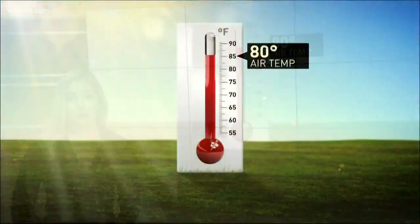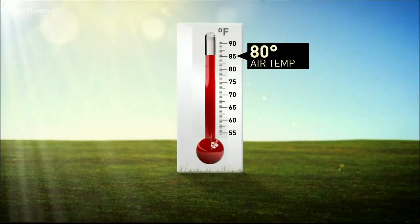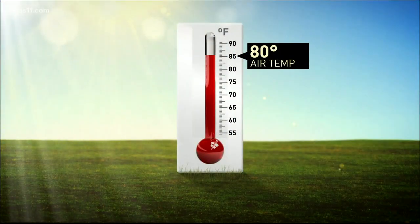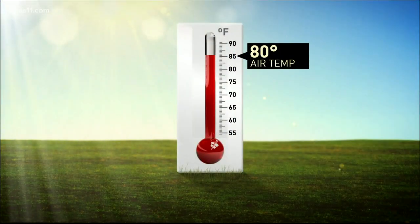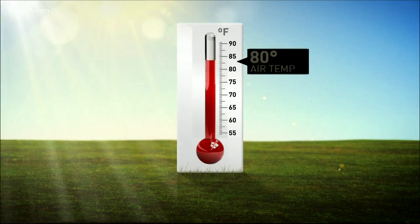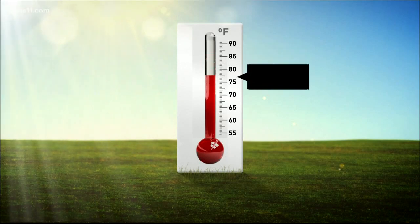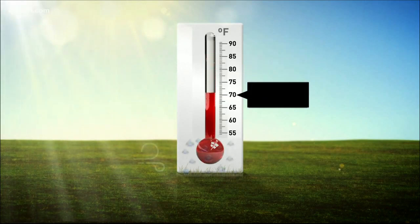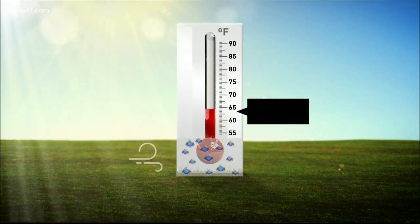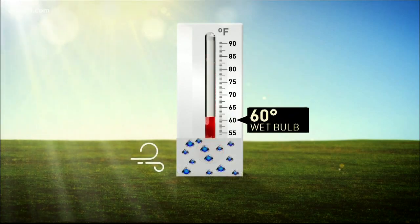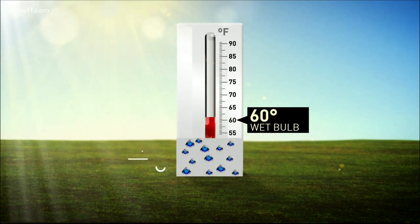First off, the dry bulb temperature is just your normal air temperature — it just means the thermometer is dry. The wet bulb temperature is the temperature read by a thermometer covered in a water-soaked cloth over which air is passed.